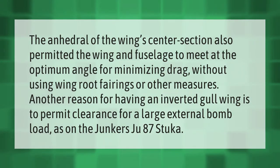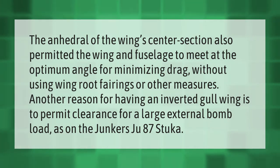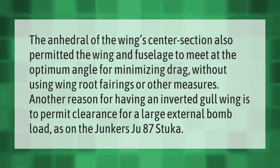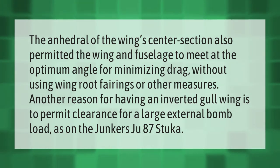The anhedral of the wing's center section also permitted the wing and fuselage to meet at the optimum angle for minimizing drag, without using wing root fairings or other measures. Another reason for having an inverted gull wing is to permit clearance for a large external bomb load, as on the Junkers Ju 87 Stuka.